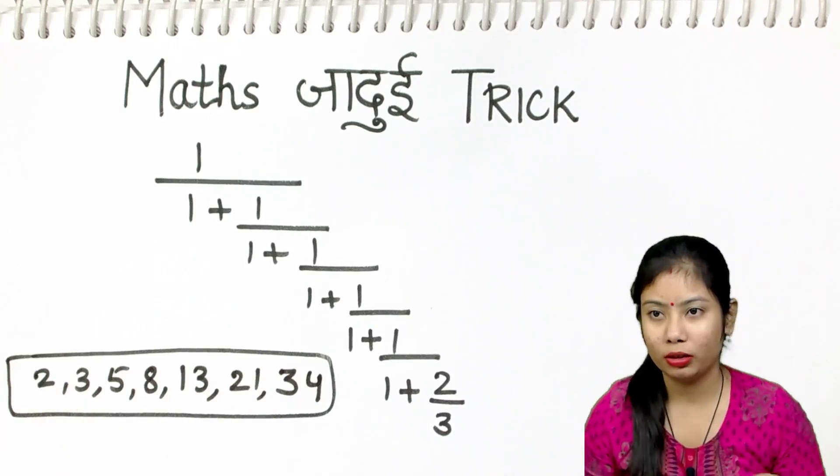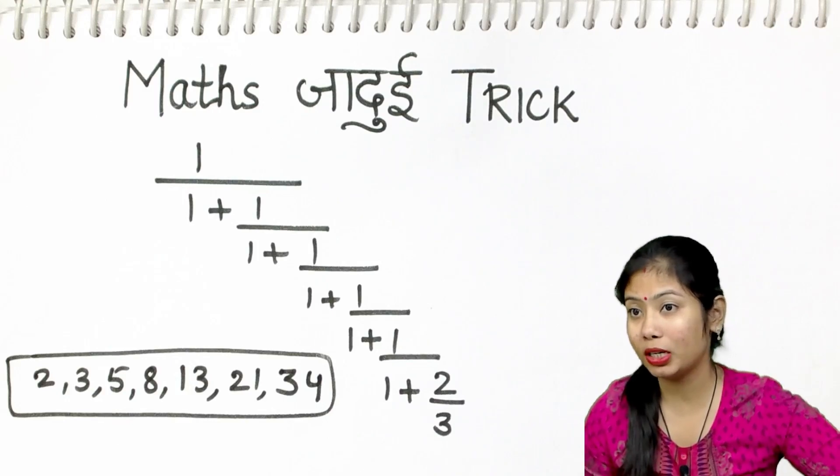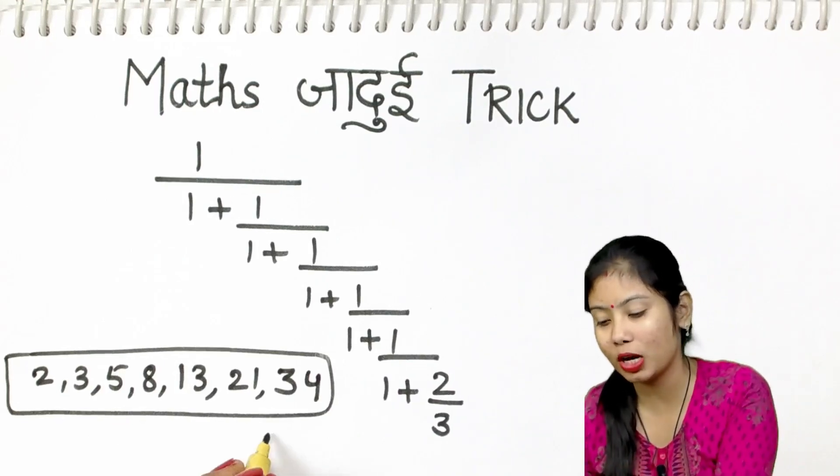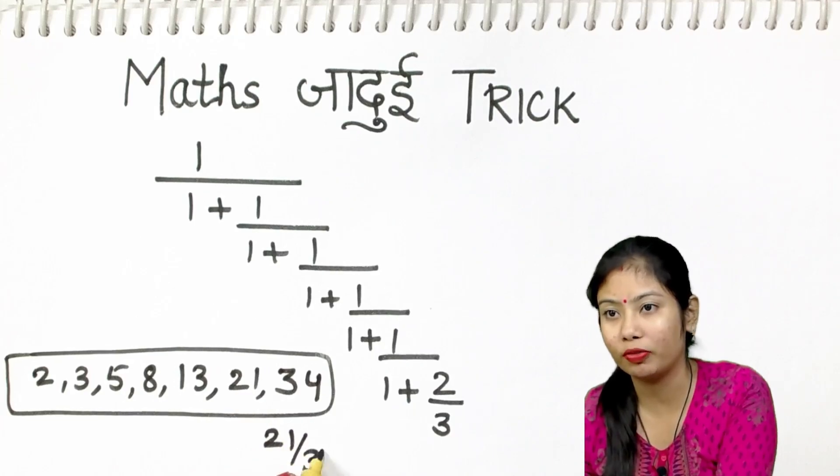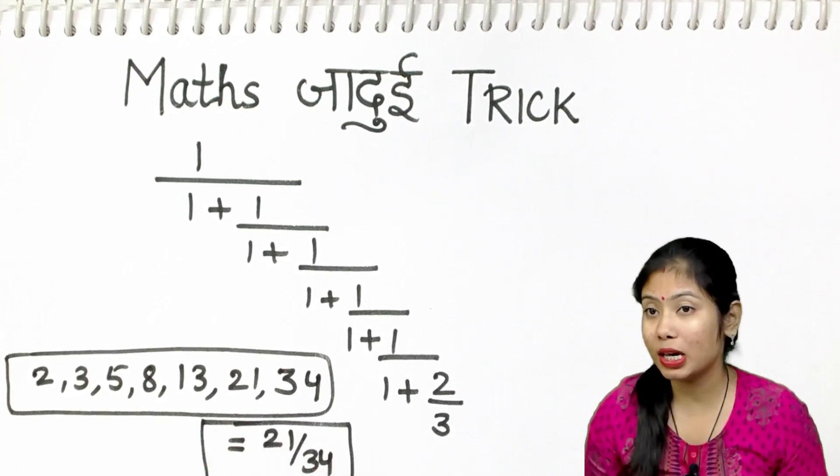What is this? How did this happen? So, let's see what the trick is here. The answer is 21 by 34. When you add it, you will get 21 by 34. Now, how is this answer?